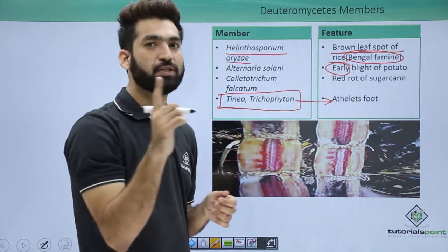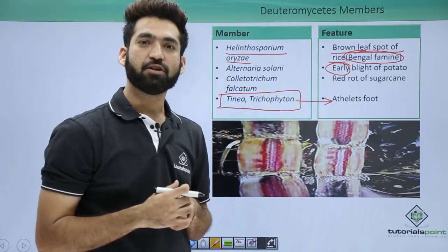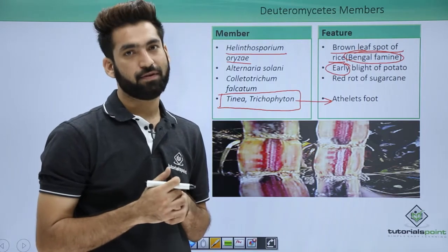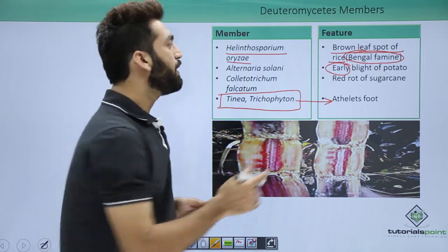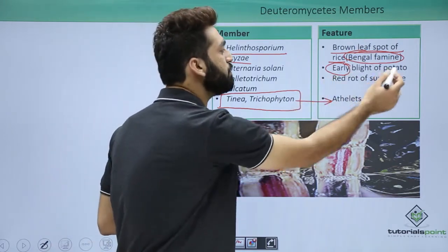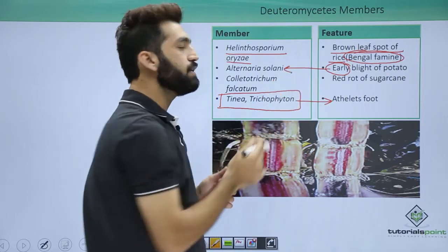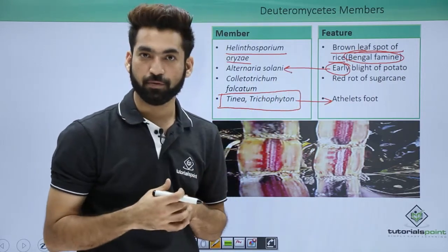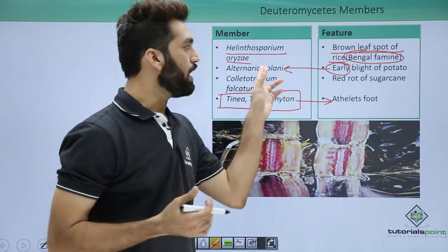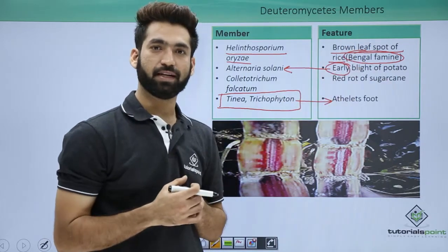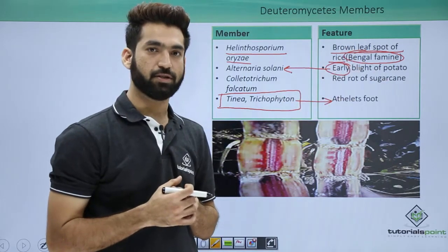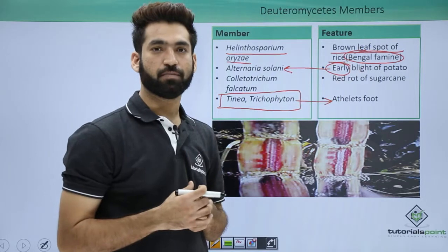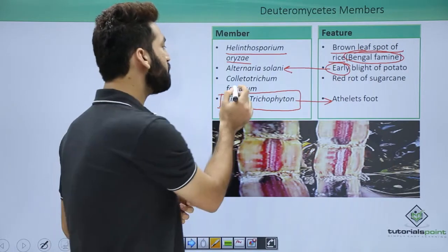Late blight of potato is caused by Alternaria solani — 'solani' referring to Solanum tuberosum, the scientific name for potato. This particular fungus infects the potato and causes disease. Note that the Irish Famine was caused by Phytophthora infestans, a Phycomycetes member, while late blight of potato is caused by Alternaria solani.